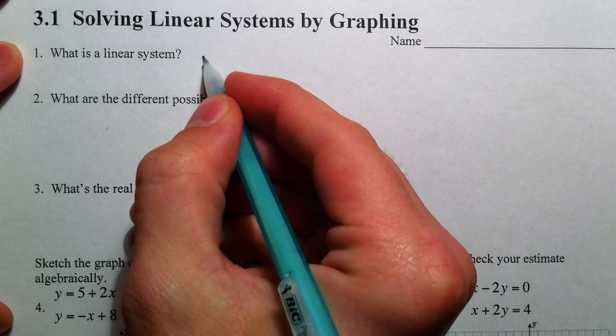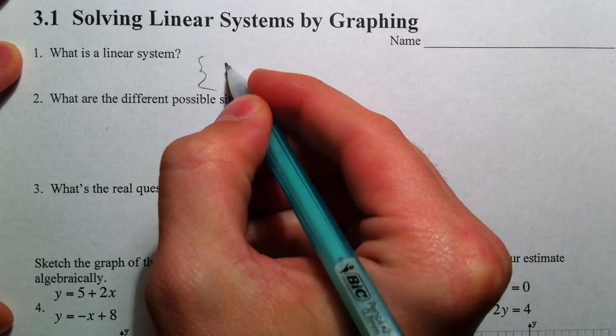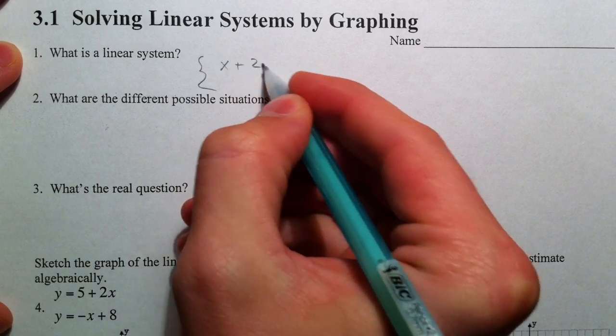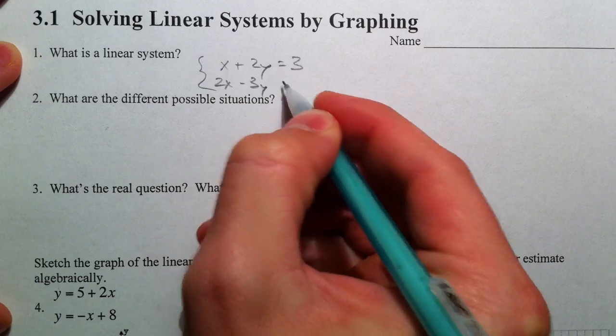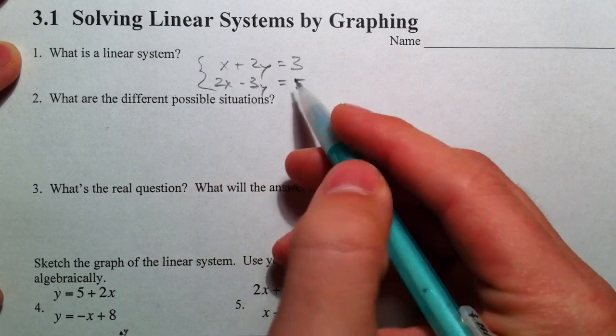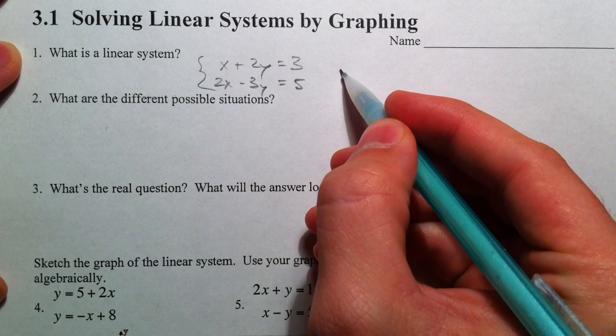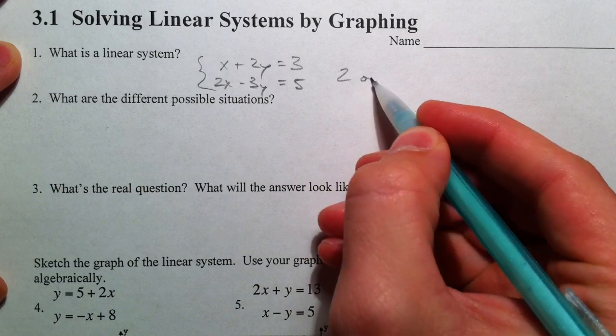Well, when you have two equations or more, say x plus 2y equals 3, 2x minus 3y equals 5, something like that. Two or more equations.